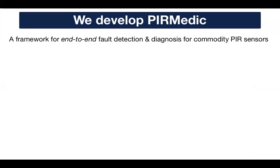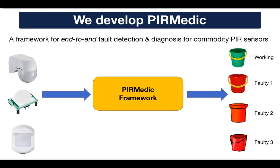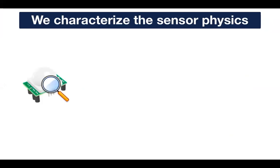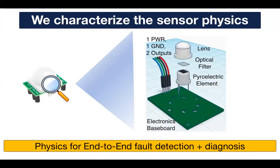To solve this, we developed PAR Medic, a framework for end-to-end fault detection and diagnosis that identifies and classifies failures in commodity PAR sensors. We accomplish this by characterizing the sensor physics, thereby leveraging physics for end-to-end fault detection and diagnosis.